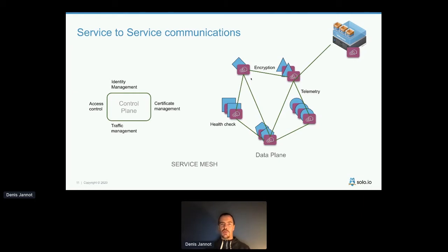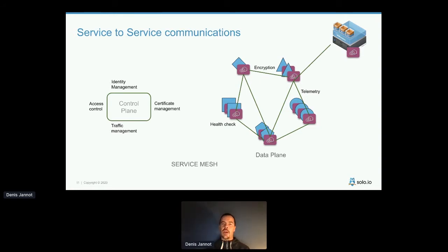That's why another approach has emerged: adding a proxy on each pod — you'll recognize the Envoy logo here, and that's no coincidence. The idea is that all communications go through the proxy, so instead of managing encryption at the application level, you delegate that to the proxy. Because everything goes through it, you get telemetry information, can enforce policies, and configure everything in a control plane.